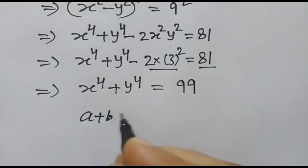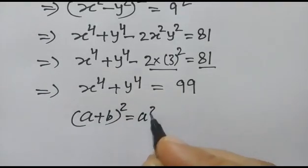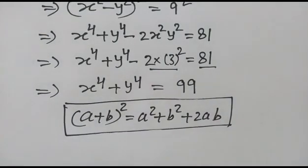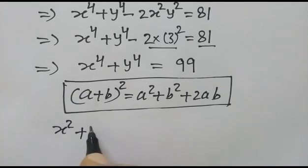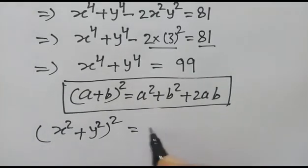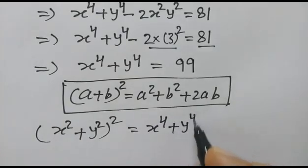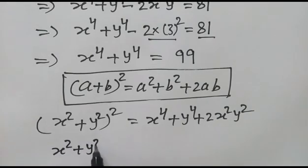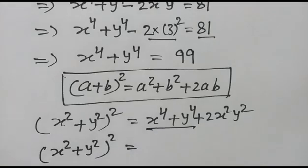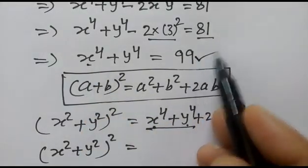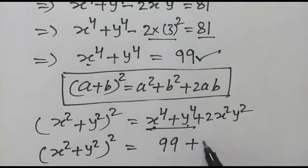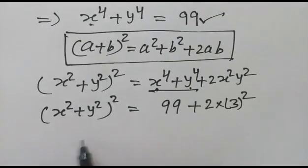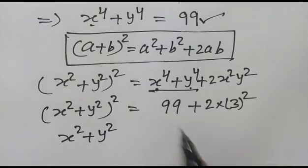We know the algebraic identity: a plus b whole squared equals a squared plus b squared plus 2ab. So x squared plus y squared, whole squared, equals x to the power 4 plus y to the power 4 plus 2 x squared y squared. That is 99 plus 2 times xy squared, which is 2 times 3 squared equals 18. So x squared plus y squared whole squared equals 117.